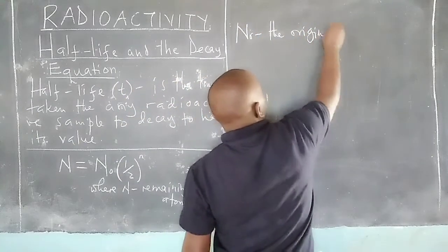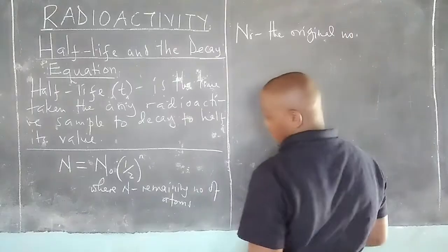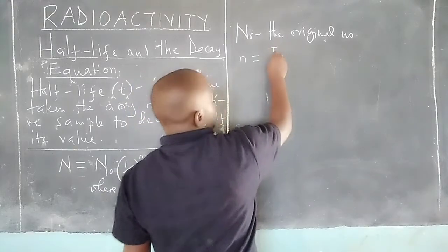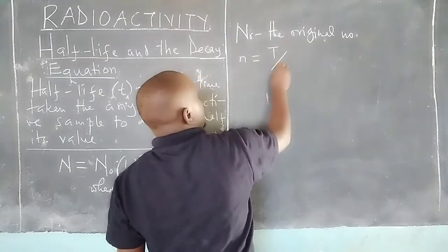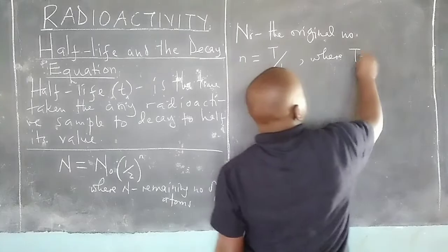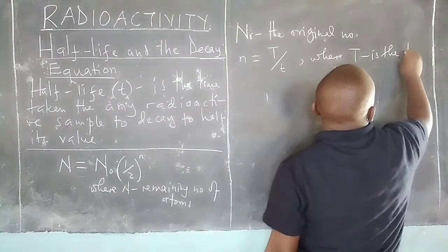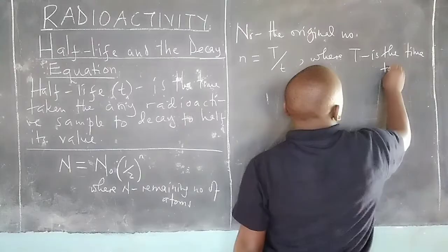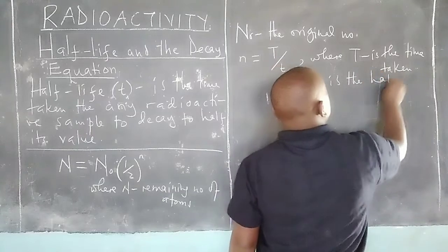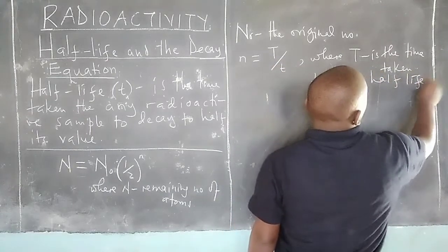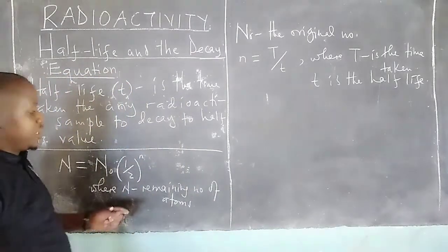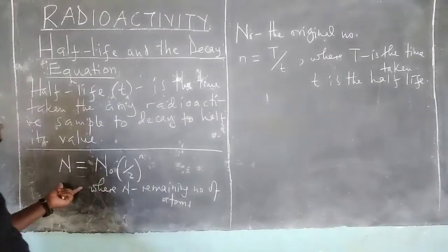Small letter n is given by time t divided by T, where t is the time taken and T is the half-life of the given atom. That is how we simplify the formula.